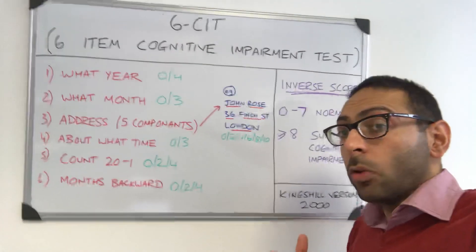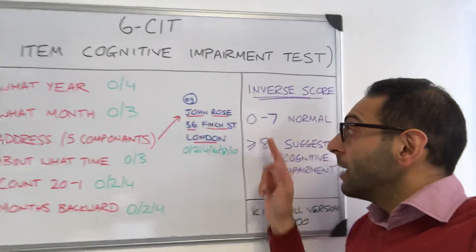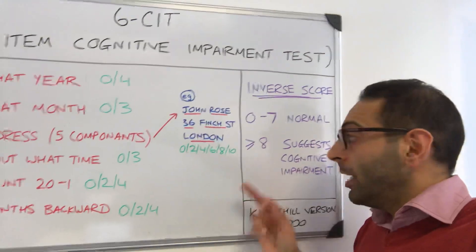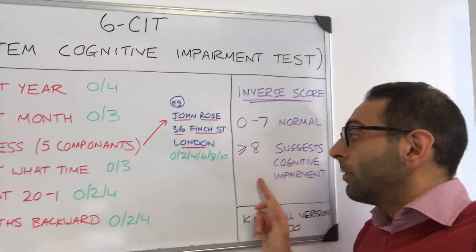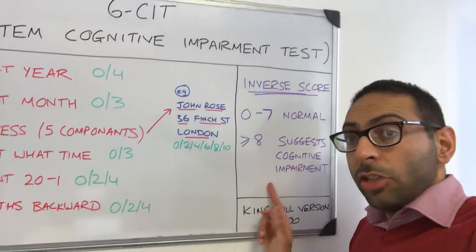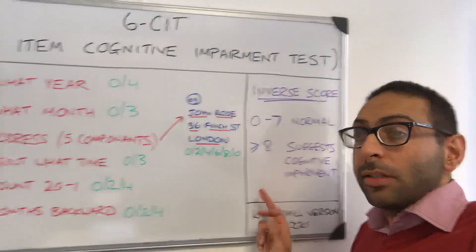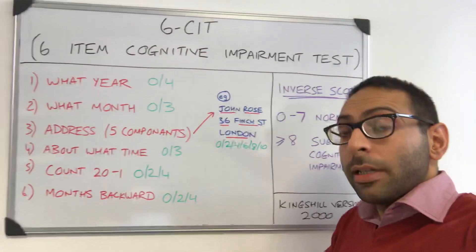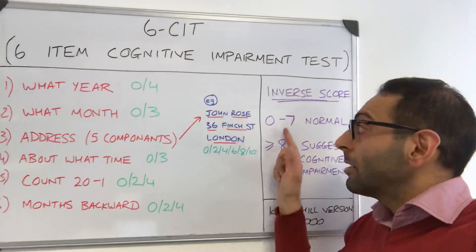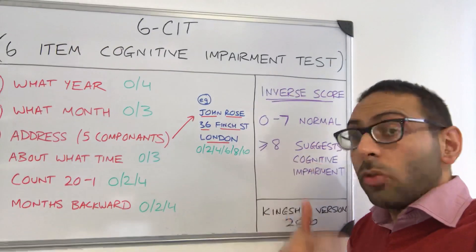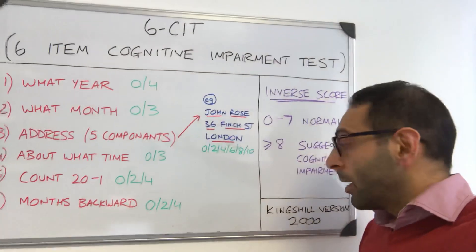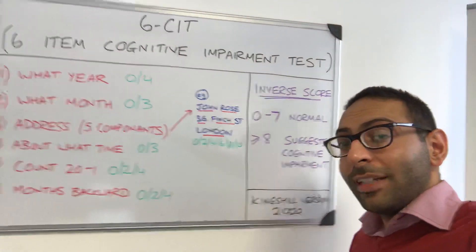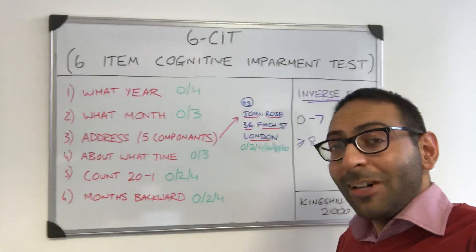You're looking for a score of zero to seven for a normal result. Once you get eight or above, it starts to suggest cognitive impairment. So, six CIT — six questions, maximum 28, looking for a score of seven or below. It's the Kingshill version 2000; you can look that up on the internet. Hope this helps.